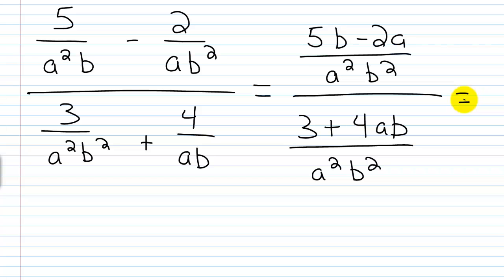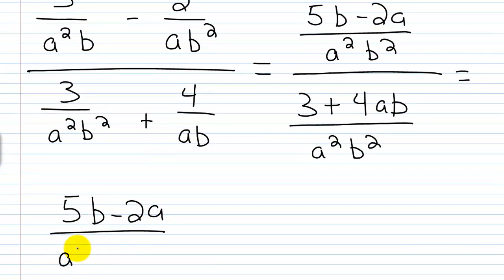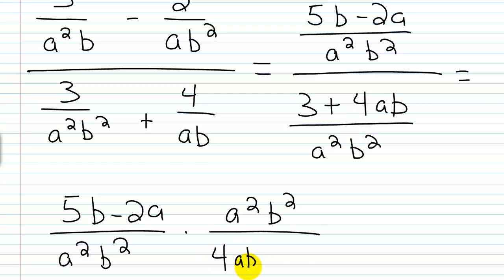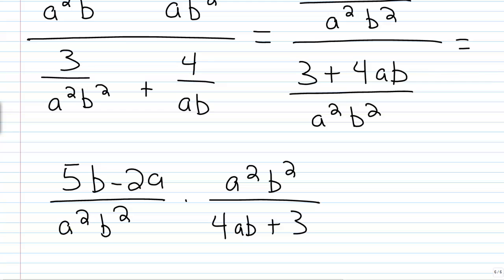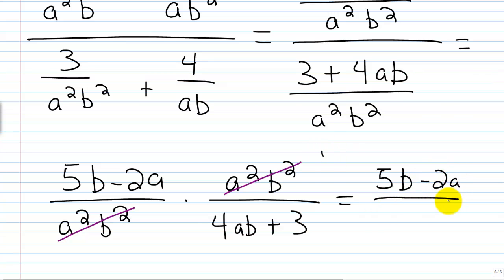Now that we've simplified our numerator and denominator, we basically just have a division problem. We're going to divide 5b minus 2a over a²b² by 3 plus 4ab over a²b². I'll multiply by the reciprocal, so this becomes 5b minus 2a over a²b² times a²b² over 4ab plus 3. The a²b² cancels, and I'm left with 5b minus 2a over 4ab plus 3. That's my final answer — there's nothing else I can do to further simplify.